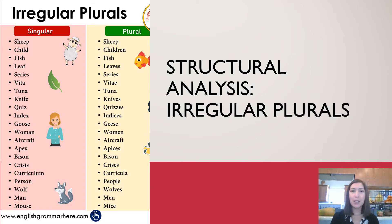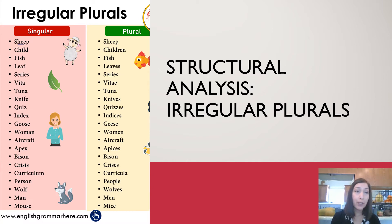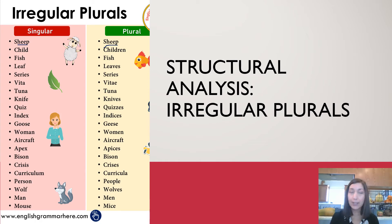But then sometimes we have something called irregular plurals, which means it doesn't fit any of those patterns. It's totally different in the sense that it may not change its spelling at all. For instance, we have that in the word sheep. One sheep — I see a sheep outside eating grass. But I saw a lot more sheep yesterday. It stays the same; it does not change in spelling. It's the same with the singular form and the plural form.